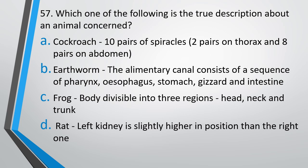Question number 57: Which of the following is the true description about the animal concerned? Cockroach — 10 pairs of spiracles, 2 on thorax and 8 on abdomen. Earthworm — alimentary canal consists of the sequence pharynx, esophagus, stomach, gizzard, intestine. Frog — body divisible into head, neck, and trunk. Rat — left kidney is slightly higher in position than the right kidney. The correct answer is option A.